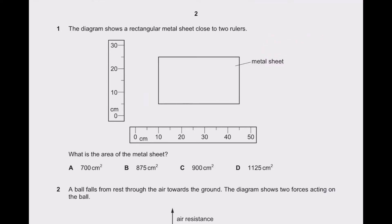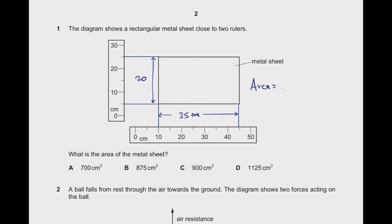If I want to calculate the length, it will be from this point to this point — that is 45 minus 10, which is 35 centimeters. For the breadth, this point is 25 and this is 5, so it is 20 centimeters. So the area will be length into breadth: 20 into 35, which is 700 centimeter squared. So A is the right answer for the first question.